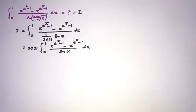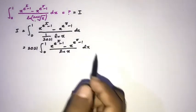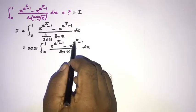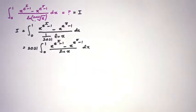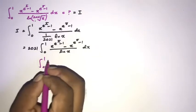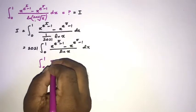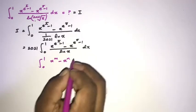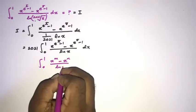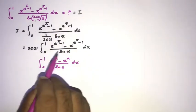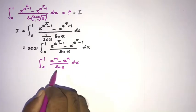Now we have x to the (e to the pi minus 1), which is a constant exponent, and x to the (e to the gamma minus 1), also a constant exponent. So let's consider the general case: the integral from 0 to 1 of (x to the m minus x to the n) over natural log of x, dx. This is the general case of our integral I.